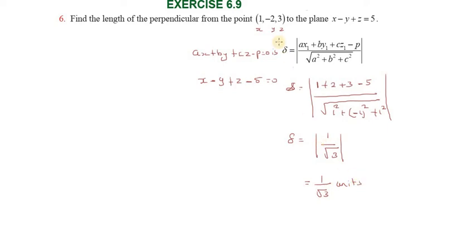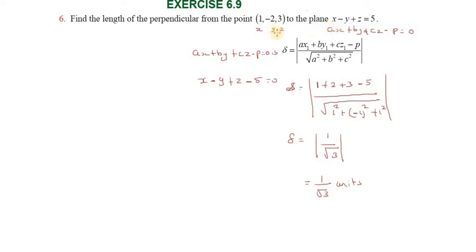In summary, we have the point, the Cartesian equation of the plane, and the formula. The plane is in the format ax plus by plus cz minus p equals 0, and the distance formula is d equals mod of (ax₁ plus by₁ plus cz₁ minus p) divided by root of (a squared plus b squared plus c squared). Thank you so much.